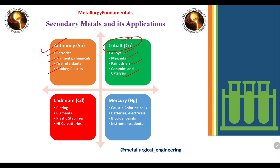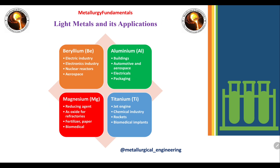The third secondary metal is cadmium, used for plating, pigments, plastic stabilizers, and nickel-cadmium batteries. The fourth is mercury, used in caustic chlorine cells, batteries, electricals, biocidal paints, instruments, and dental applications.